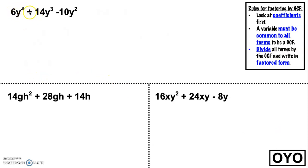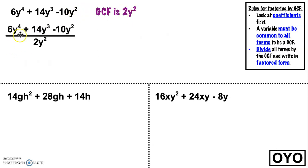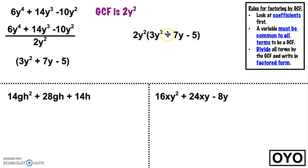Next: 6y to the fourth plus 14y cubed minus 10y squared. The coefficients are 6, 14, and 10 — the largest number I can pull out of all three is 2. They all have y's in common. How many y's can I pull out of every term? I can pull out y squared from the last term, but I can't pull y cubed out of all of them, so the greatest common factor for the variable part is y squared. So I'm dividing out 2y squared from all terms, which leaves 3y squared plus 7y minus 5. The factored form is 2y squared times 3y squared plus 7y minus 5.